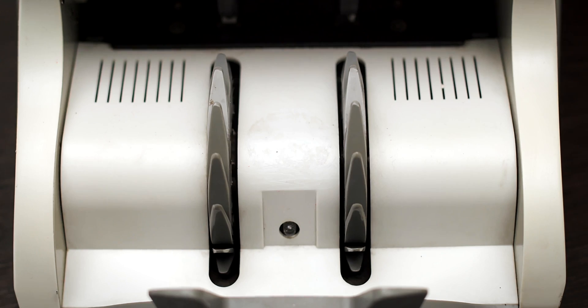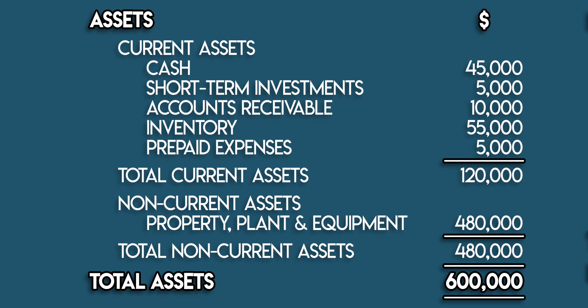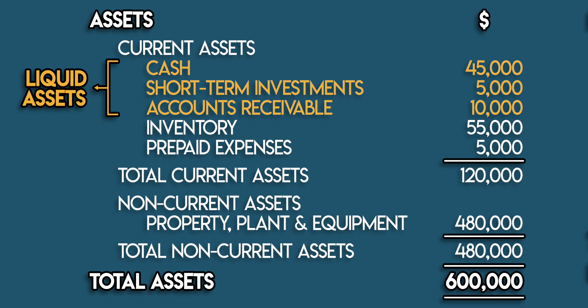Time out — how does liquidity come into this? Liquidity measures how easily an asset can be converted into cash. This concept is key to understanding liquidity ratios. Current assets on the balance sheet are usually arranged in order of liquidity. At the top we have cash, which is the most liquid asset of them all. Beneath that we have short-term investments and accounts receivable.